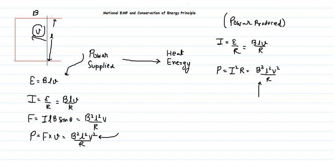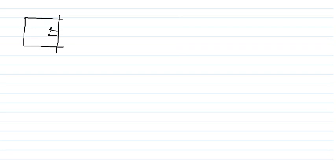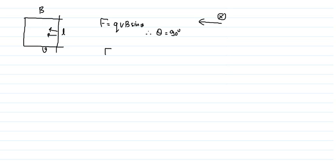We can also derive the formula for motional EMF using the Lorentz force method. Suppose the rod is moving with velocity V, its length is L, and the magnetic field is B. If we consider a small charge Q inside the rod, the force on the charge is QVB sinθ. Since velocity and magnetic field are perpendicular, θ = 90°, so the force on the charge is QVB.